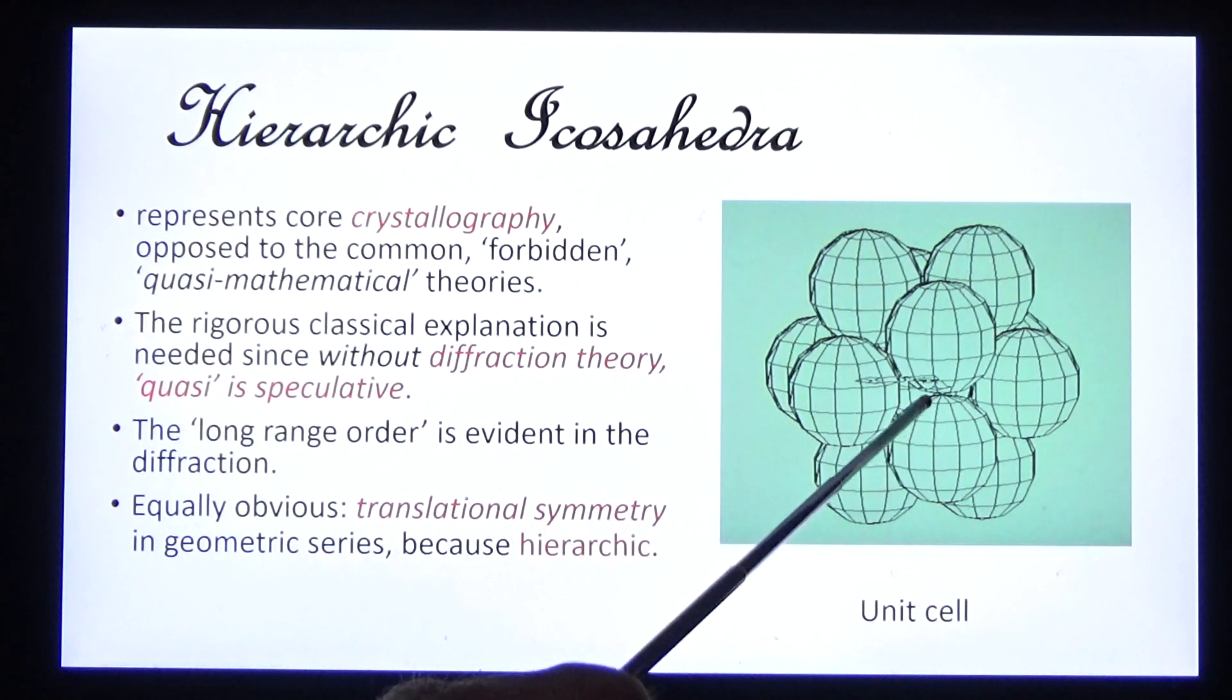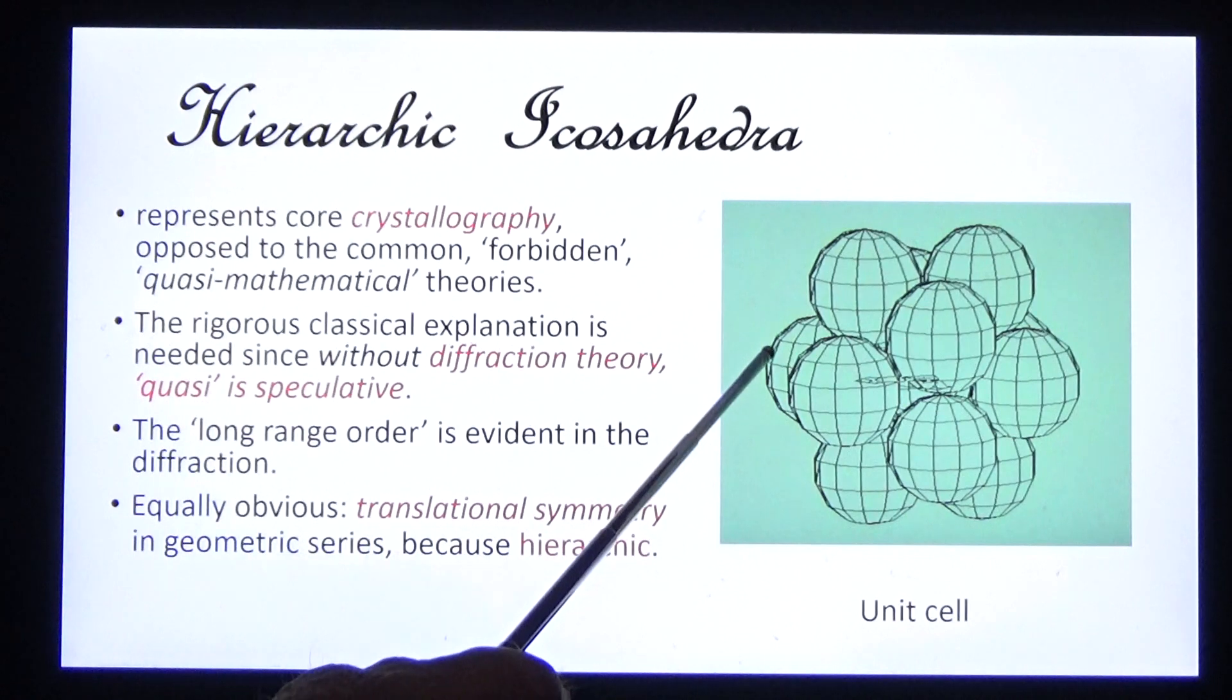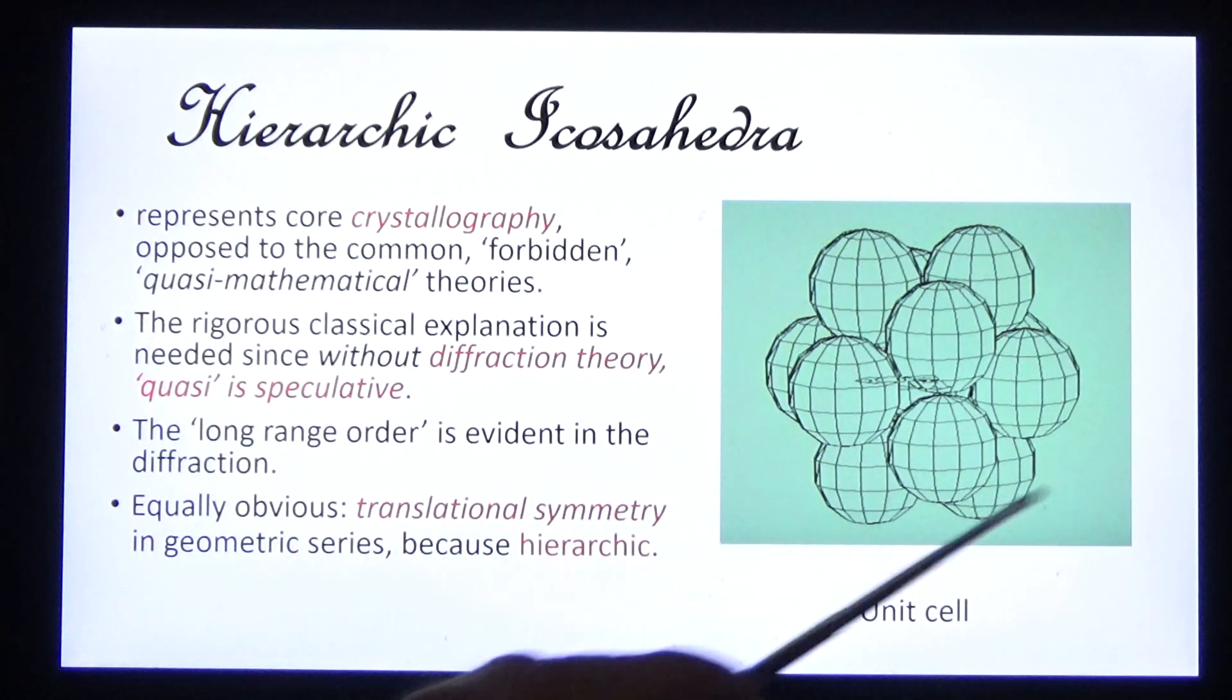Manganese is at the center. This is the unit cell. And the cell is edge-sharing. So the stoichiometry is aluminum-6-manganese.